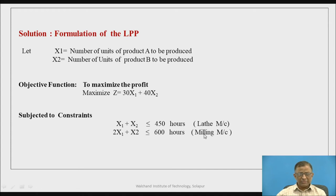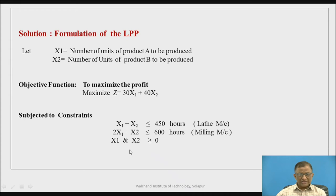Similarly, the milling machine has a maximum availability of 600 hours per month. Product A requires 2 hours per unit on the milling machine, so the requirement is 2X1, and product B requires 1 hour per unit giving X2. So the second constraint is: 2X1 + X2 ≤ 600. Additionally, X1 and X2 must be greater than or equal to zero, since production quantities cannot be negative. This completes the LP model formulation.